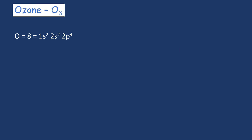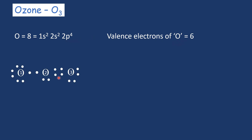Let's extend the same logic to ozone. We have only one type of atom: oxygen. Oxygen's atomic number is 8, with electronic configuration 1s2, 2s2, 2p4, giving 6 valence electrons. Looking at the Lewis dot structure of ozone and numbering the oxygen atoms as 1, 2, and 3, let's examine the colored Lewis dot structure.